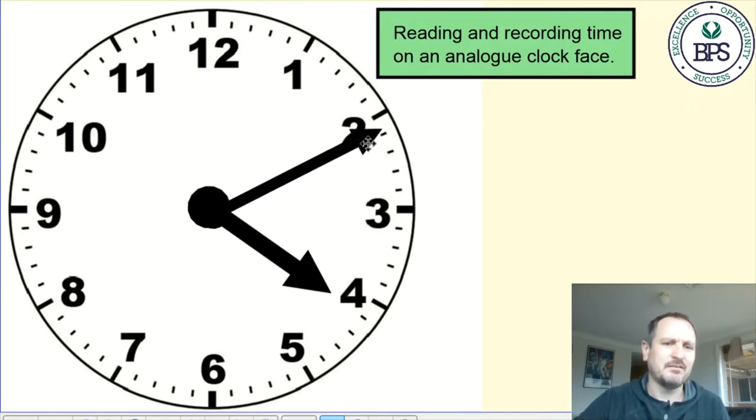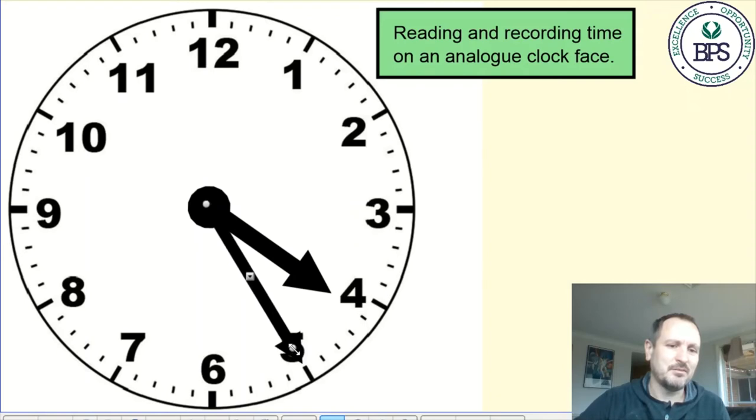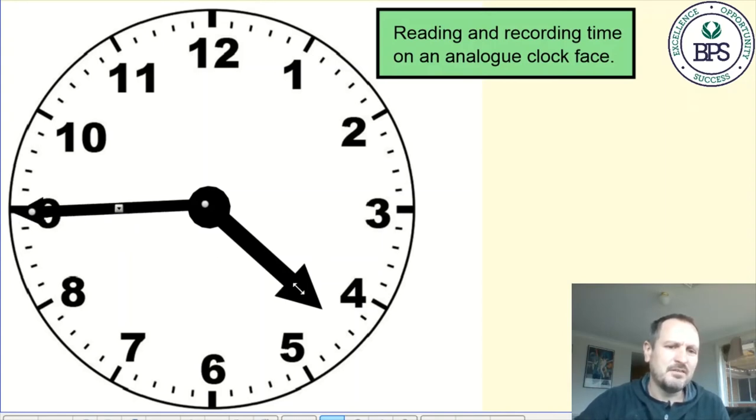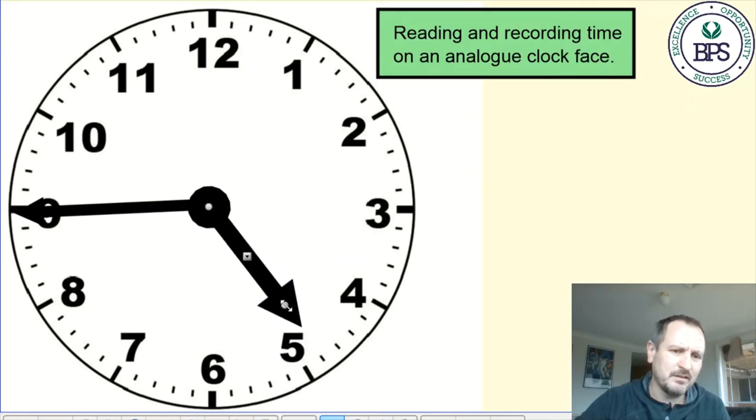As this hand ticks around more, moving to 25 past four, this hand will have probably ticked closer to halfway. Then as we get to 4:45, or as most of us would say quarter to five, the hour hand will now be almost pointing at the five. It will be three quarters of the way there, and this is often where we get some confusion when reading the time because it looks like it's almost pointing at the five, but it's important to note that it hasn't yet reached the five.